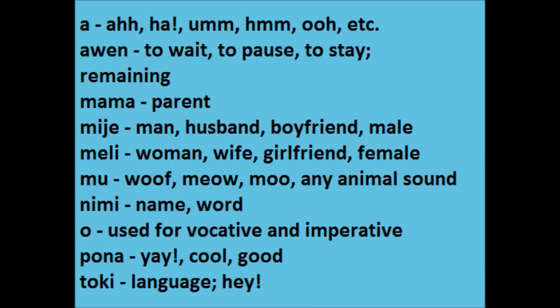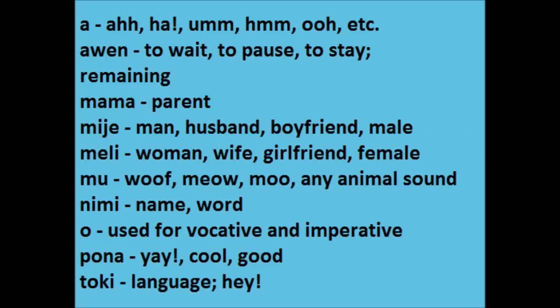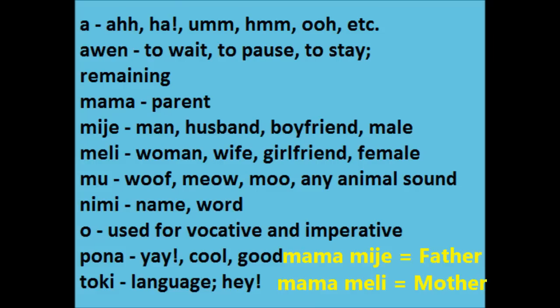On to gender. In Toki Pona you do not often use or need gender, but in the times you do, 'meli' and 'mije' are the words. On their own, 'meli' and 'mije' mean woman and man, or the translations wife, husband, girlfriend, boyfriend. To show something's gender, just add whichever one suits. For example, 'mama mije' is father, while 'mama meli' is mother.